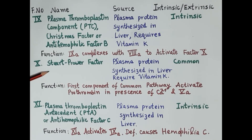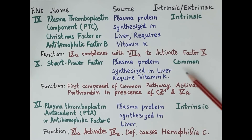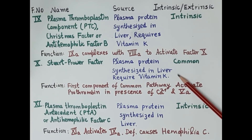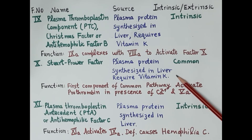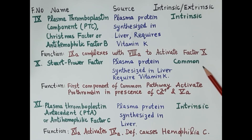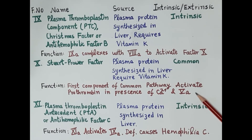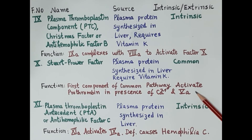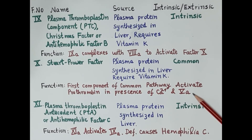Clotting factor 10 is termed the Stuart-Prower factor. It is a plasma protein synthesized in the liver, and its synthesis requires the presence of vitamin K. Clotting factor 10 is common for both the intrinsic and extrinsic pathways, and it is the first component of the common pathway. It activates prothrombin to thrombin in the presence of calcium and activated clotting factor 5.